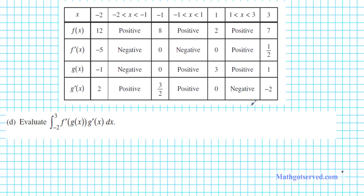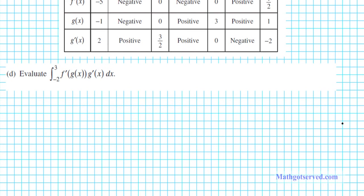The definite integral of f prime of g of x times g prime of x dx. So basically this is undoing the chain rule.